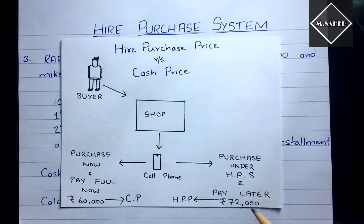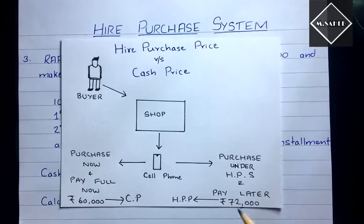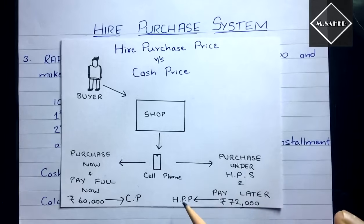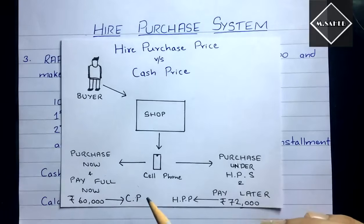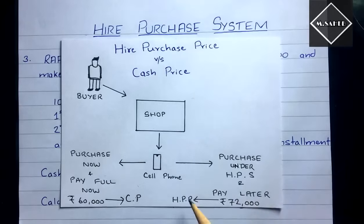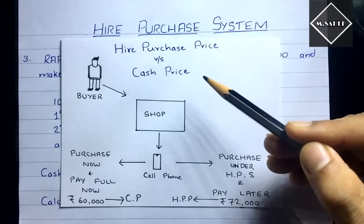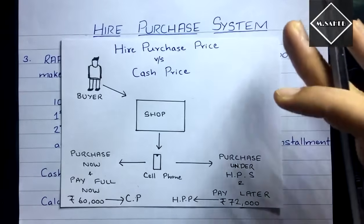The same cell phone costs 60,000 on cash basis but 72,000 under the Hire Purchase System. The difference exists because the higher purchase price includes interest — payment is made later in installments. The cash price does not include any interest. So the difference between higher purchase price and cash price is interest.